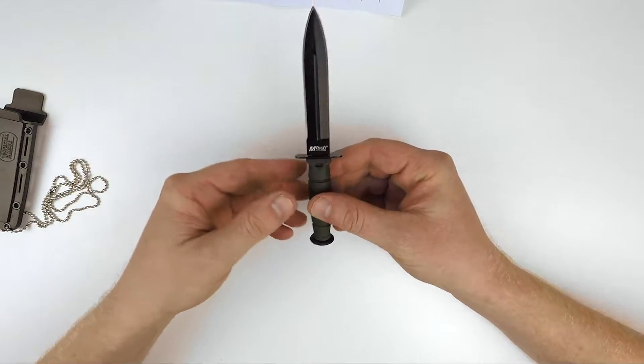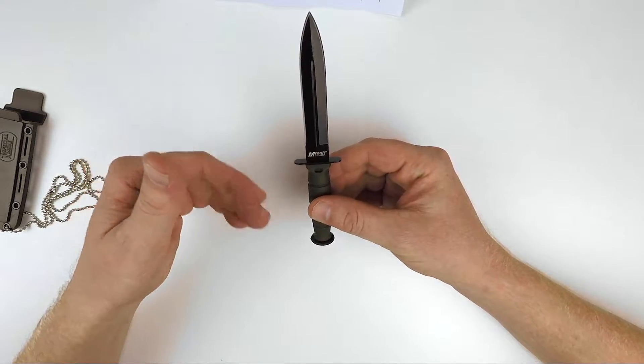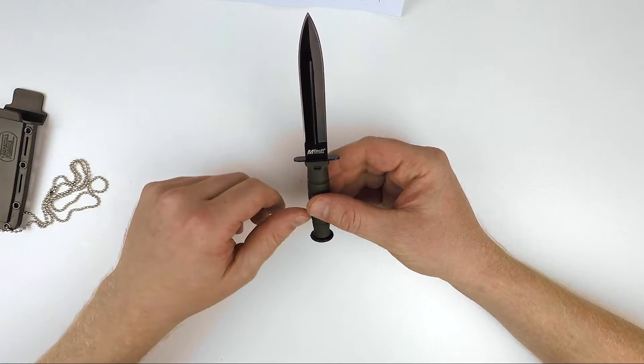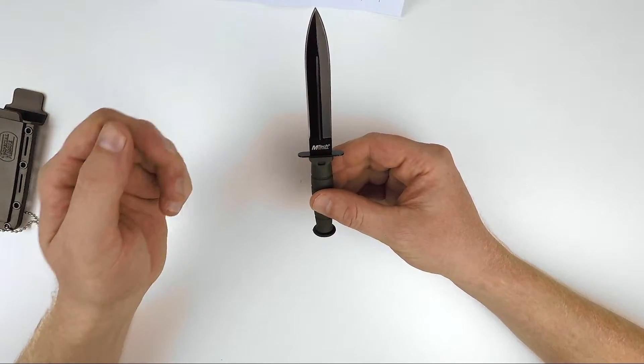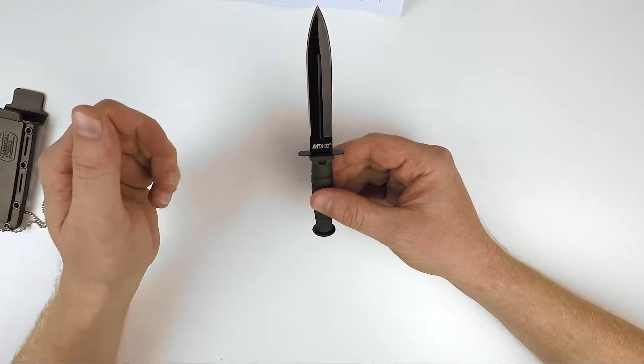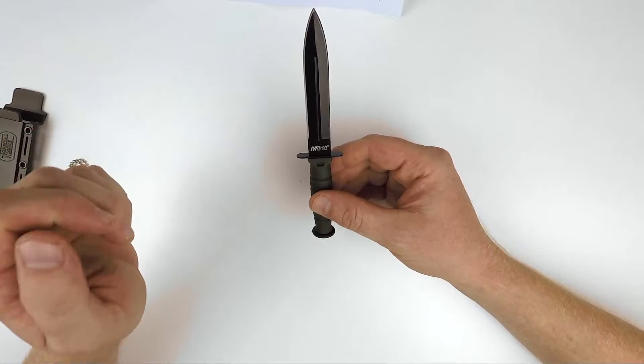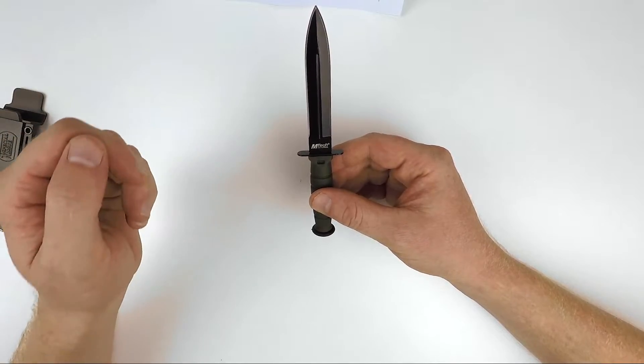So let's get into some of the specs. First of all, it's got this really cool tactical black coating just to help with rust. The steel is 440 stainless steel. So once again, really good corrosion resistance and quite easy to sharpen.